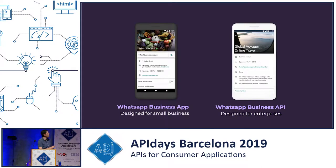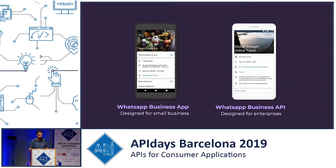One is the WhatsApp Business App, available for Android and iOS, which is designed for small and local businesses — it's like a supercharged WhatsApp app that allows you to send some automatic replies, and a little more. Not very interesting for developers. The other is the WhatsApp Business API, with big companies and global brands in mind, and this is the focus of my talk today.